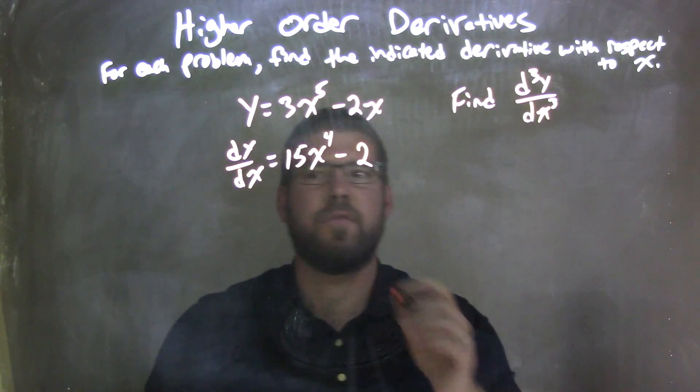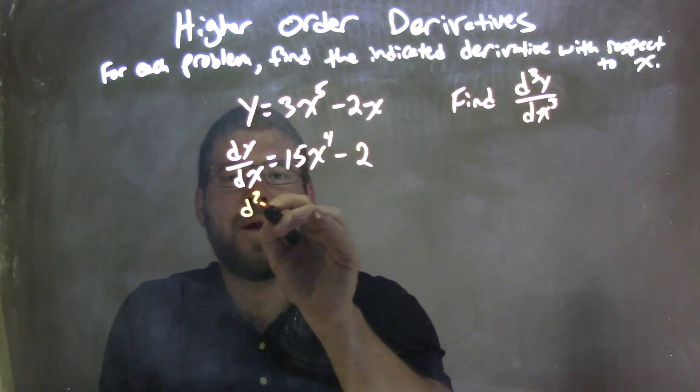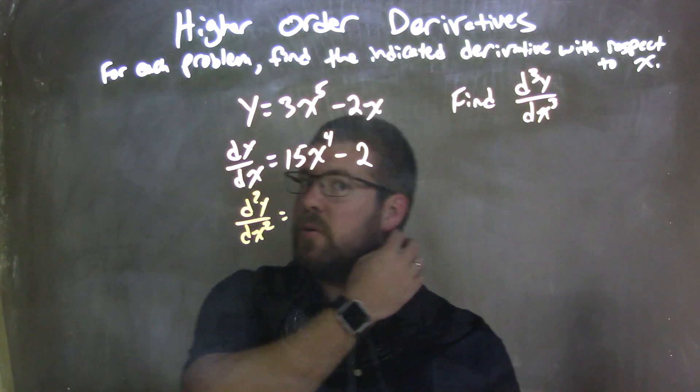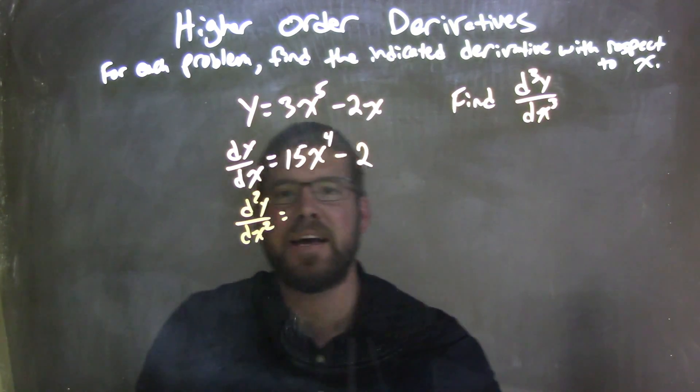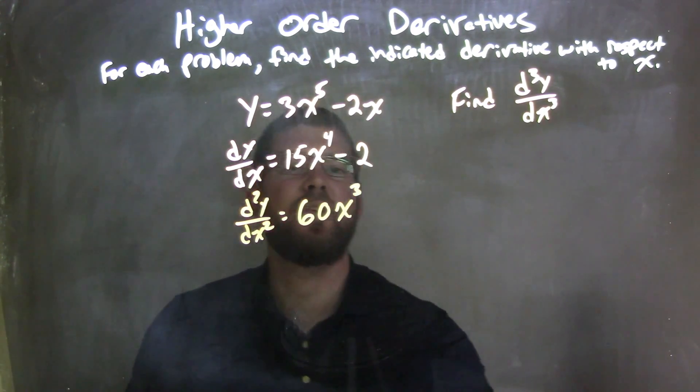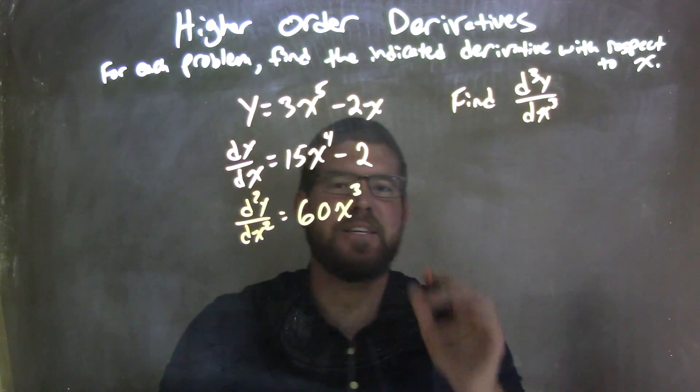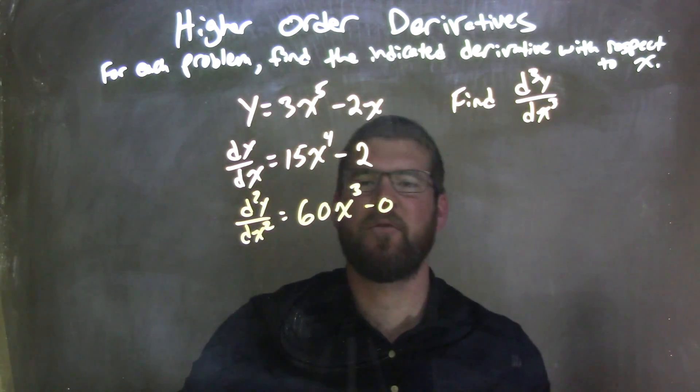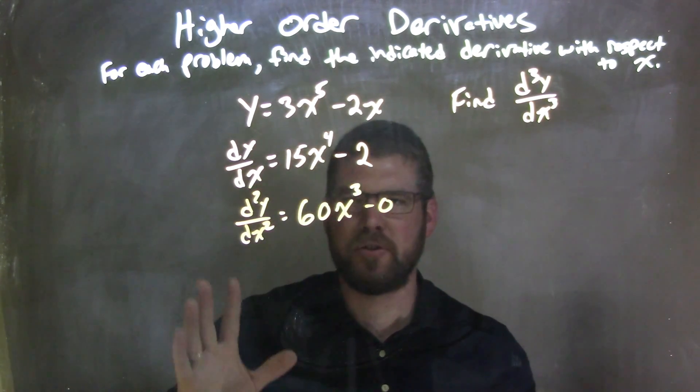So we find the second derivative here. d to the second power of y over dx squared is equal to, well, 15 times 4 is 60. So we have 60x to the third power. And then the derivative of 2 is just 0. So if you want, you can write the minus 0 there. Usually, you just get rid of it, but I'll put it there for this problem here. But the next step it will just be gone.